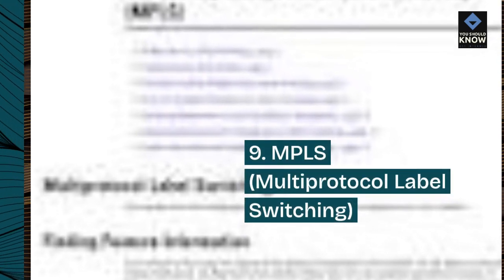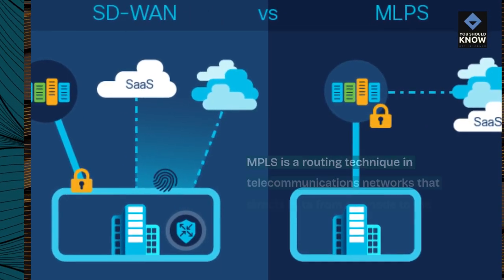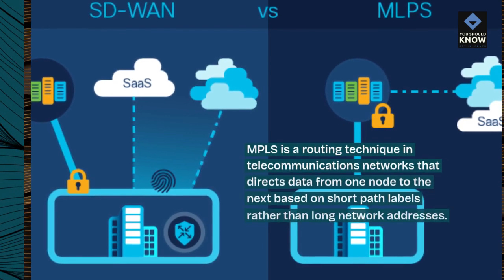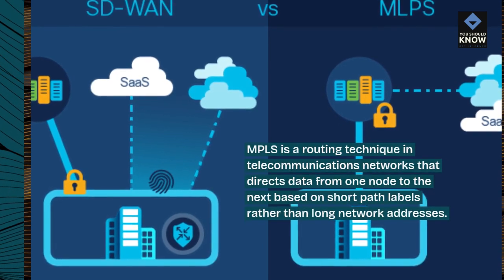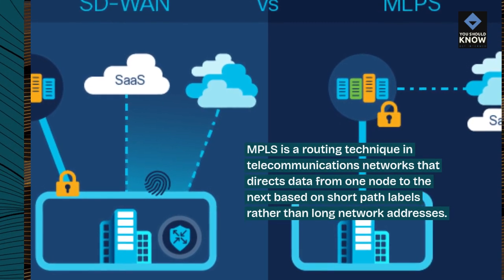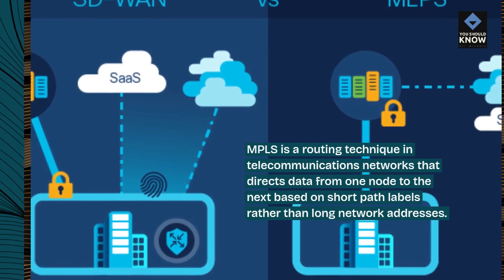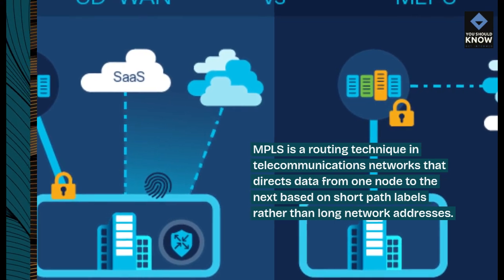9. MPLS, Multi-Protocol Label Switching. MPLS is a routing technique in telecommunications networks that directs data from one node to the next based on short path labels rather than long network addresses.